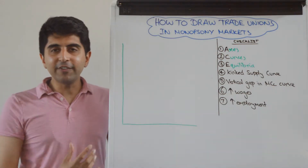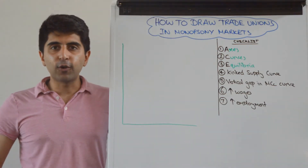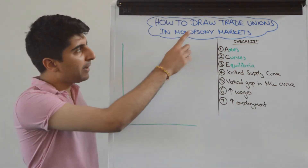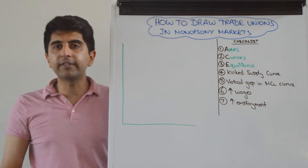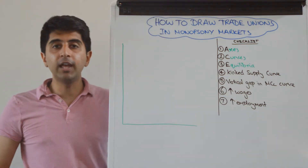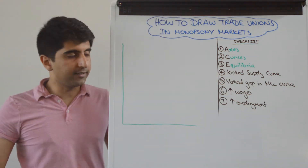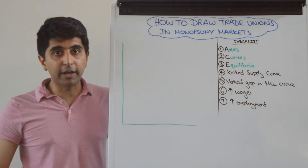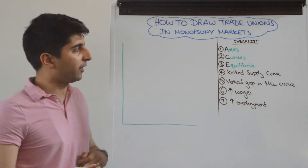Hi everybody. One of the most difficult diagrams in the course is being able to draw the impact that trade unions have in monopsony controlled labour markets. You need to be able to nail this diagram. Let's get moving.